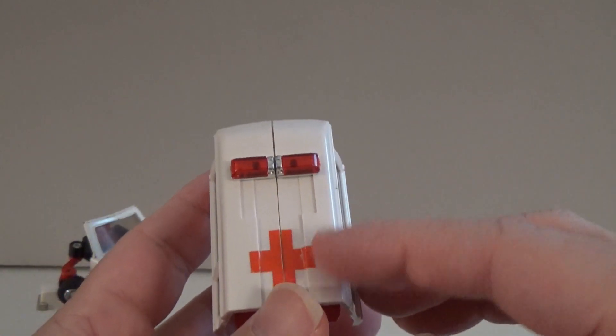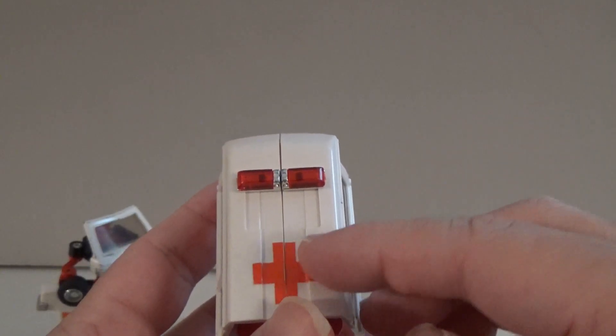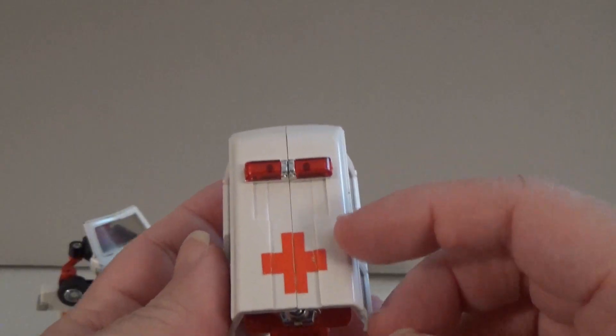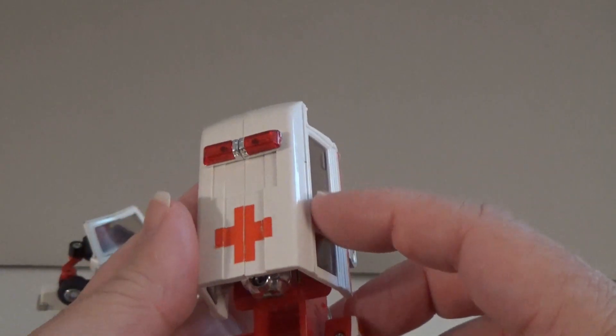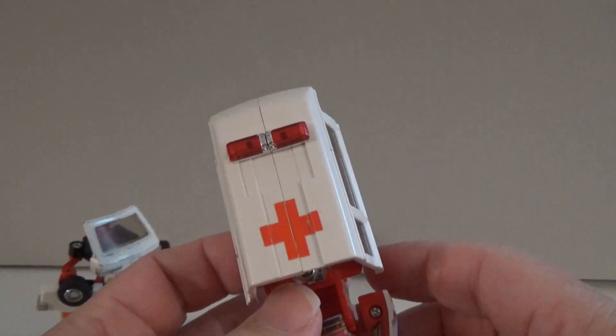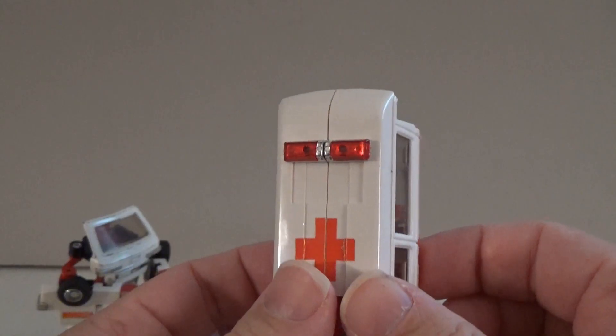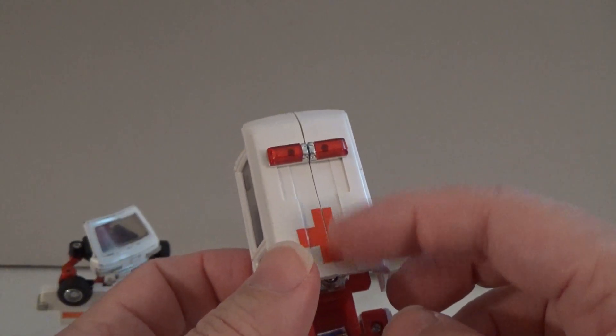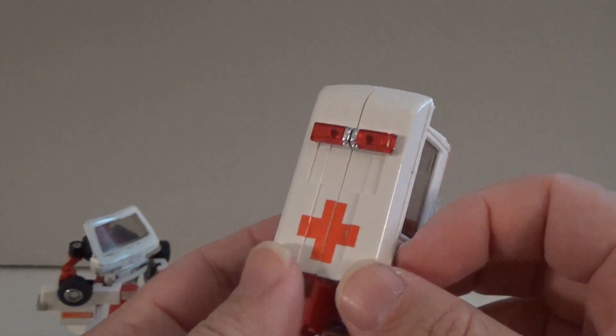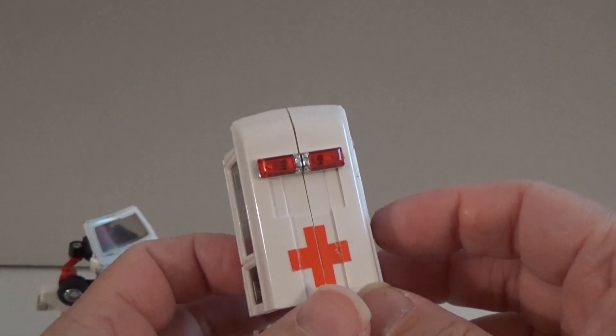But the red cross actually is a trademarked logo. It's not a free logo that anybody can use. It is a trademarked insignia. So the actual Red Cross did threaten to sue Hasbro over it. So later issues of Ratchet had the red cross emblems removed from the toy. But of course, it is just a sticker, so it can be scraped away.